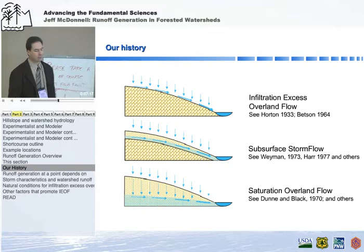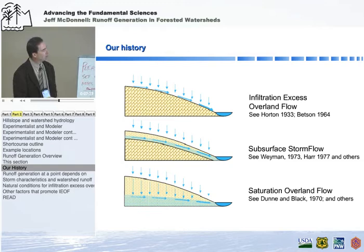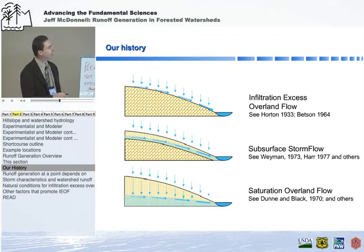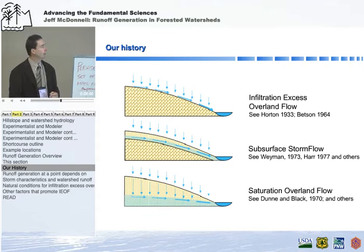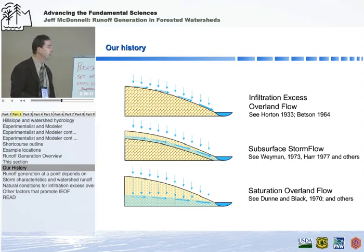Our history starts in the early 1930s when Horton was active at his experimental facility in Vuvresville, New York. He did a lot of work on how rainfall intensity might exceed soil infiltration capacity to produce infiltration excess overland flow — a widely held view that is the basis for many operational watershed models used today. Betson in the early 1960s elaborated on this, noting that zones of limited infiltration aren't uniformly distributed but are more patchy, related to land use differences — developing the partial area concept.